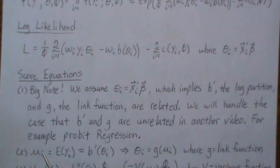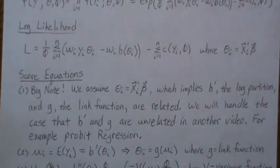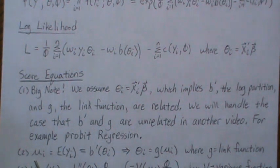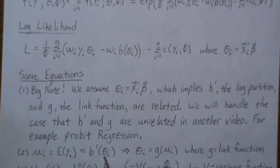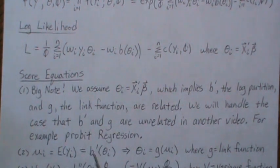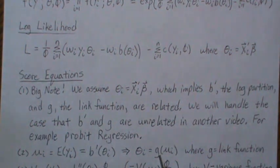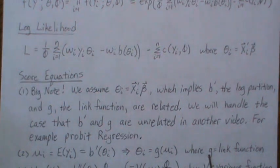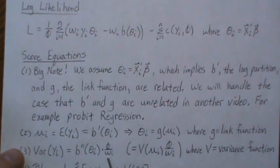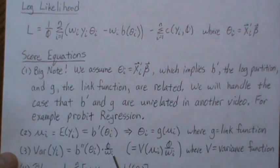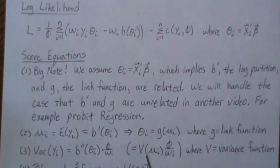Before we jump into the score equations, note that the mean of y, which we denote by mu_i, is the first derivative of the log partition. To solve for theta, we take the inverse of b-prime and call that g, so g of mu equals theta. That g is the link function — specifically the canonical link function because we get the canonical parameter back. The variance, as discussed in previous videos, is the second derivative of the log partition times phi over w.